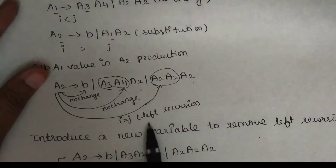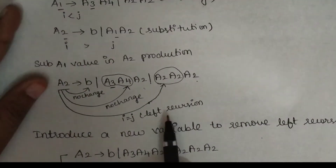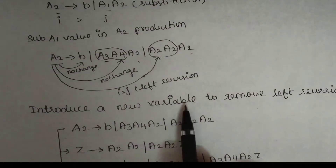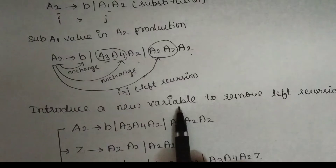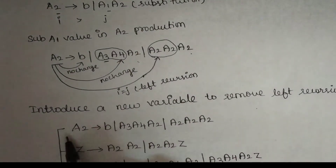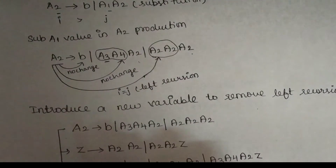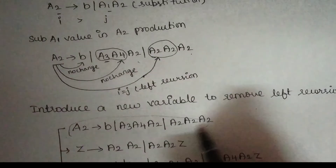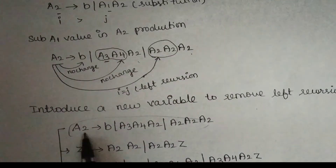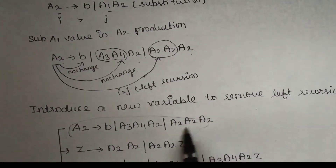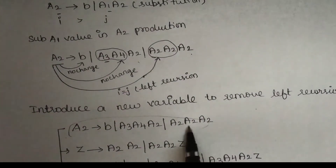So if we eliminate the left recursion, we will introduce new variables. What is Z? If you look at the left recursion, which is a production — we will remove A2. If you look at A2, here is a production.